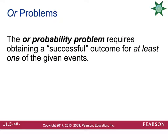First we're going to start with OR problems. The OR probability problem requires obtaining a successful outcome for at least one of the given events. For example, if I want the probability of flipping a coin with heads up or rolling a 1 on a die simultaneously, anytime I get a heads up that's a successful event, anytime I get a 1 on the die that's a successful event, and anytime I get both simultaneously, that is also a successful event.